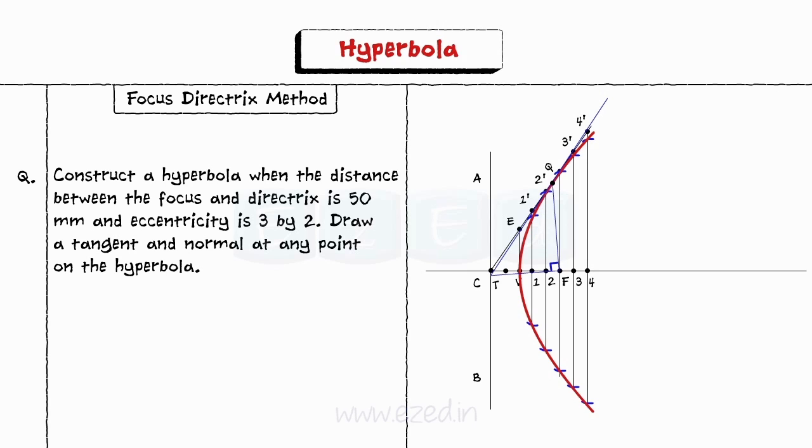Step 12. From this point Q, draw a perpendicular line. This line is normal to the curve.